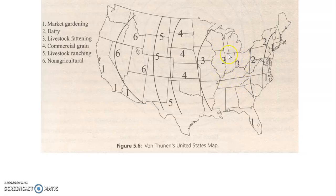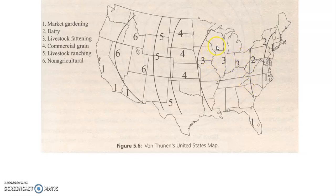Ring three is livestock fattening — a lot of mixed crop and livestock through corn, wheat, and soybean areas, with livestock fattening because they force-feed them corn. You see a lot of pigs, turkeys, and chicken barns down through Arkansas, northern Mississippi, Tennessee, Kentucky, western North Carolina, Ohio, Indiana, Illinois, Missouri, and Iowa — a lot of livestock fattening through this region.